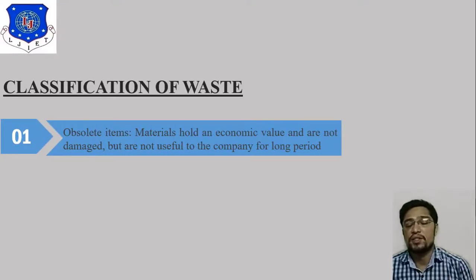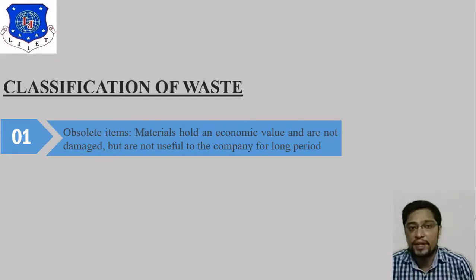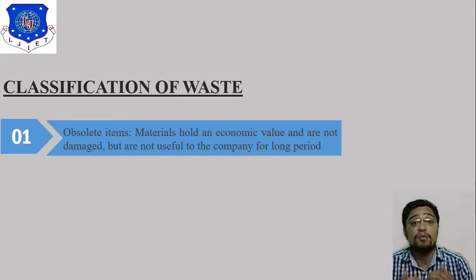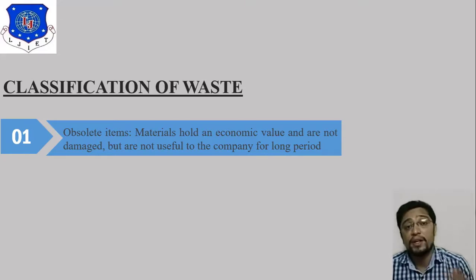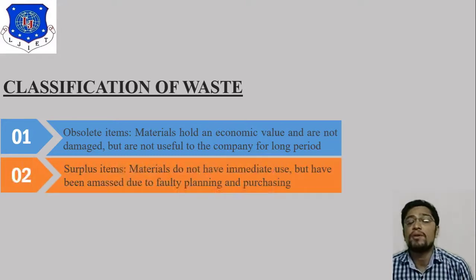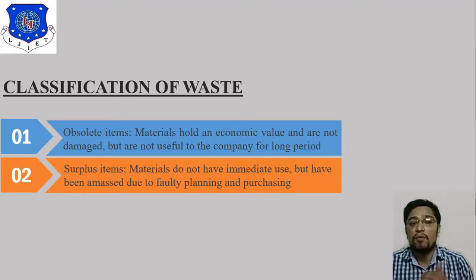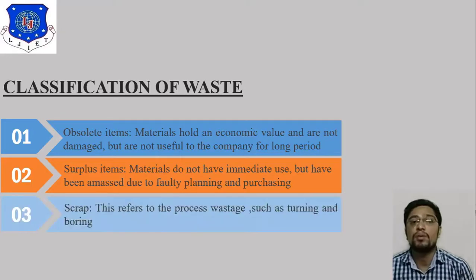Looking at the classification in detail: first, obsolete items — these are materials that hold economic value and are not damaged, but are no longer useful to the company for the long term. Second, surplus items — these are materials that do not have immediate use but have accumulated due to faulty planning and purchasing.